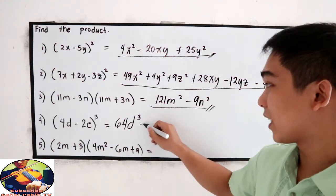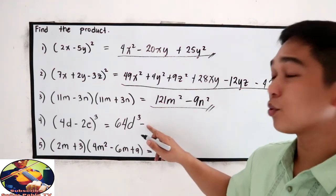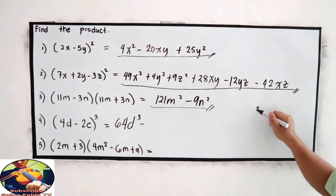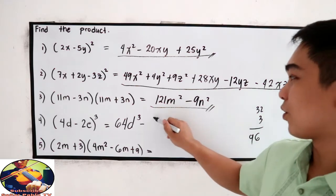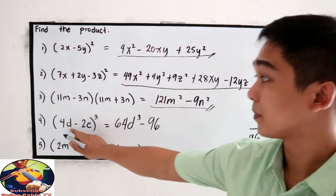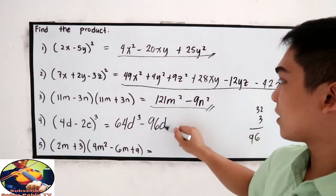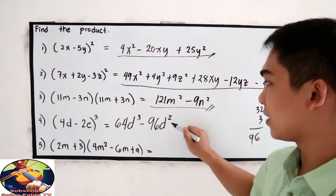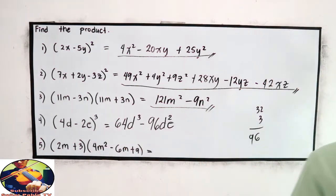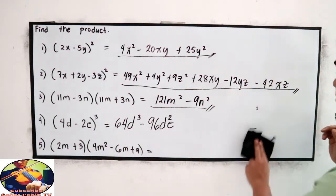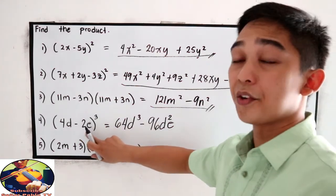So this sign is negative. Negative 32 times 3. So 32 times 3 is 96. 96. So 96d squared. Then we have e.